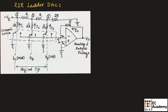Since the non-inverting terminal is connected to ground, we can write the voltage VB will be equal to 0. Therefore, we can write voltage VA will also be equal to 0. This is due to the concept of virtual ground.